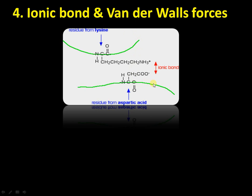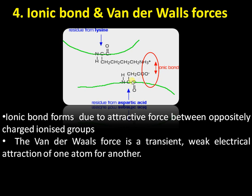Now moving to the ionic bond and van der Waals forces. The ionic bond is a bond between oppositely charged amino acids. For example, aspartic acid is an acidic amino acid with –COOH and is negatively charged, whereas lysine is a positively charged amino acid. When both of these amino acids come together, there is a chance of forming an ionic bond — a bond between electrically opposite molecules.